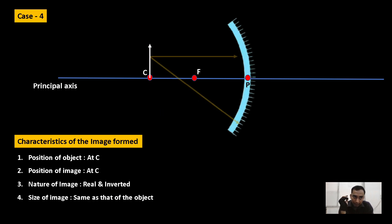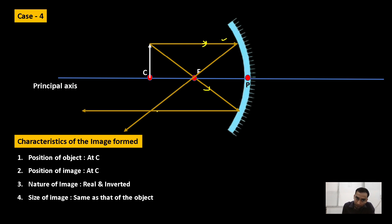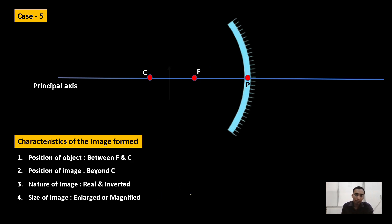Case four: the object is at C. Two rays are drawn — one parallel to the principal axis reflects through focus, and the incident ray passing through focus reflects to meet at a point exactly below C. The image is real and inverted, formed at C, and the height of the image is the same as the height of the object — same size.